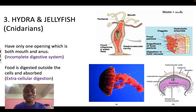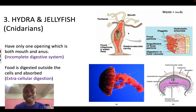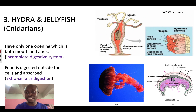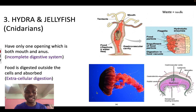When the food gets into the space called the gastrovascular cavity, enzymes are released from the cells to digest the food. After that, the nutrients are absorbed into the cells. This is an example of extracellular digestion — the food is digested outside the cell.